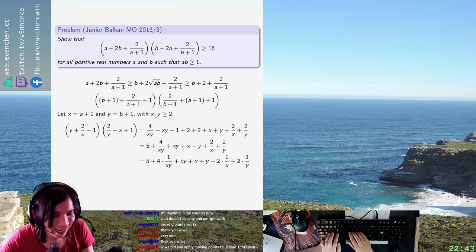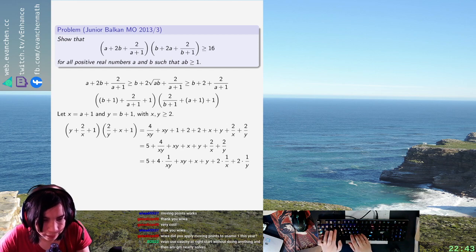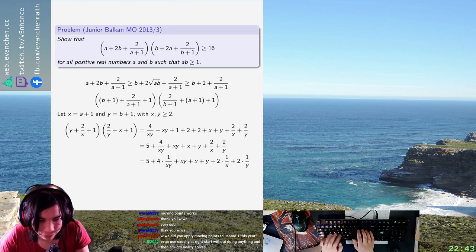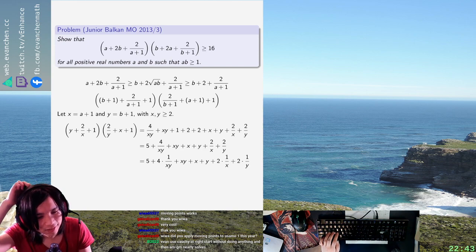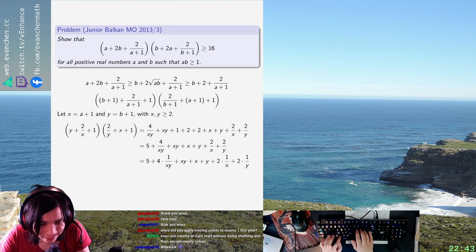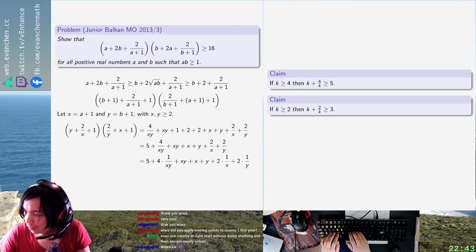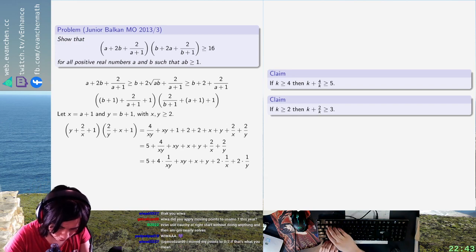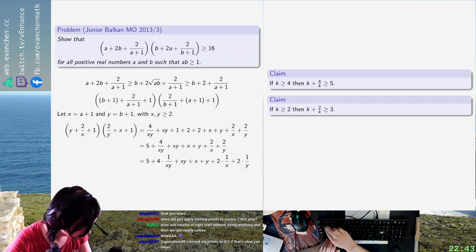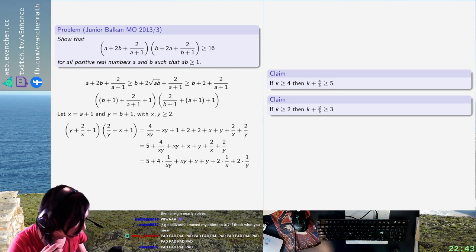Oh, oh, sorry, I'm bad. Alright, claim: If K is at least 4, then K plus 4 over K is at least 5. Second claim: If K at least 2, then K plus 2 over K is at least 3. Right, I don't need this to be true for all X and Y. I don't need it to be true for things that are the way they want them. Okay, I'm stupid. Here we go.